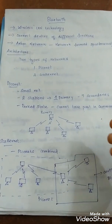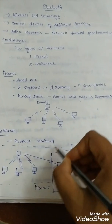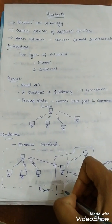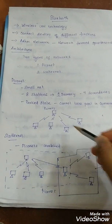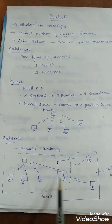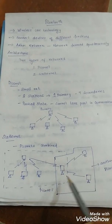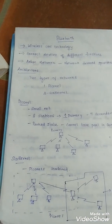Piconets can be combined to form a network called Scatternet. Here it is one Piconet and it forms a second, another Piconet. Two Piconets combined to form a Scatternet. A secondary station in one Piconet can be the primary in another Piconet.